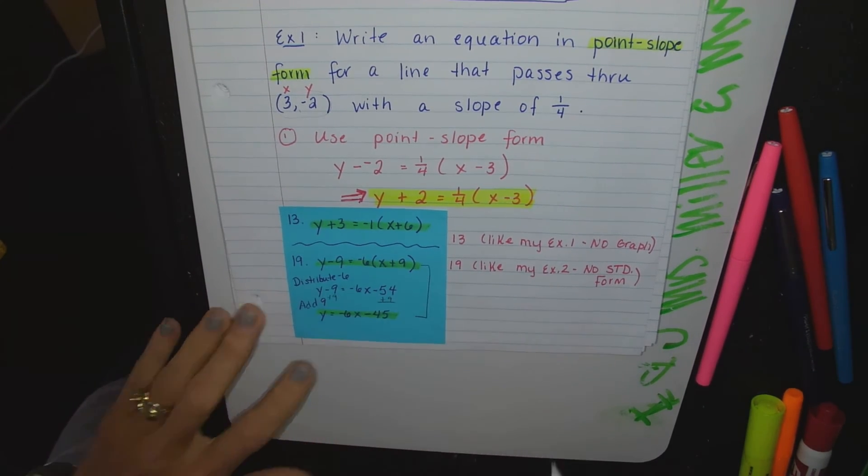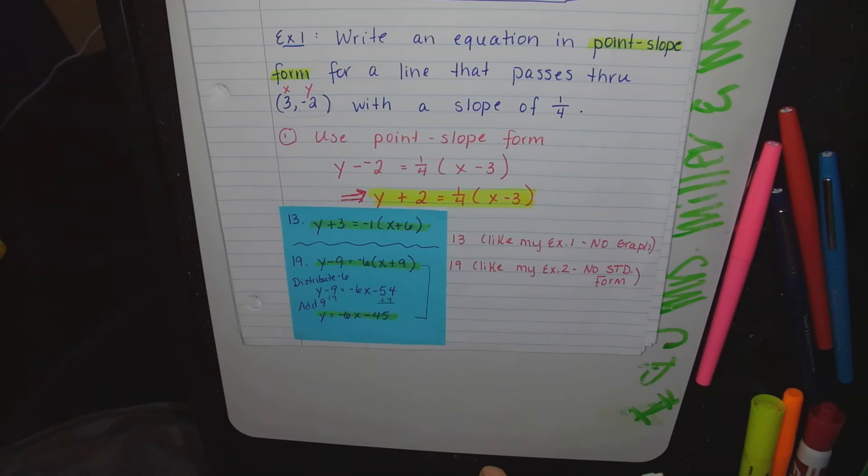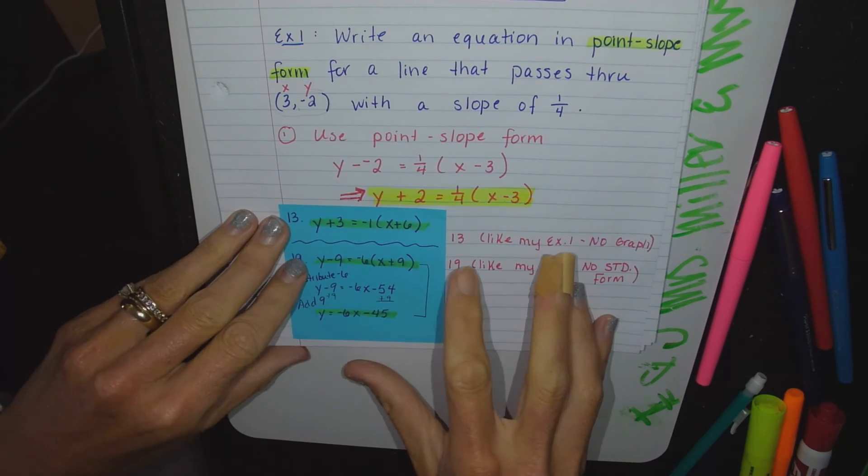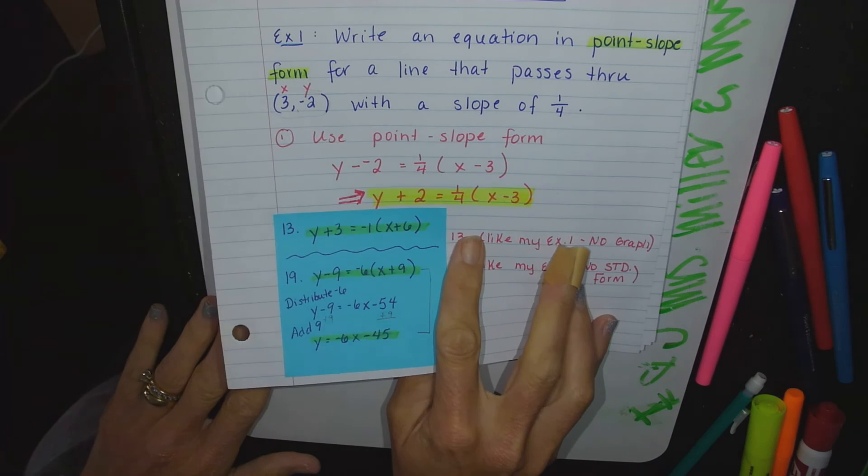And it's not so bad, is it? Just two steps: distribute that slope, and then you've got to move that y over.